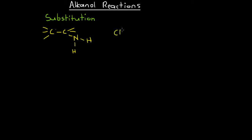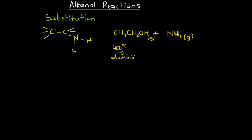If we write this out as a chemical equation, we have the semi-structural formula of ethanol reacting with ammonia — which is the origin of the amino group — in a gaseous state. At 400 degrees Celsius with an aluminium catalyst, we replace the hydroxyl group with the amino group, and the leftover product is a water molecule (H₂O). So that is how ethanol undergoes a substitution reaction to produce ethanamine.